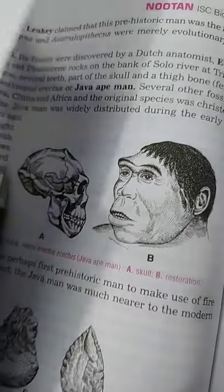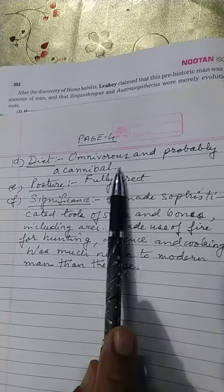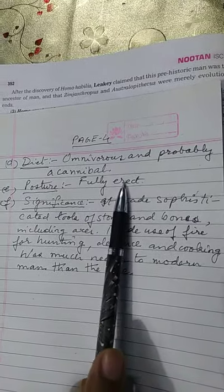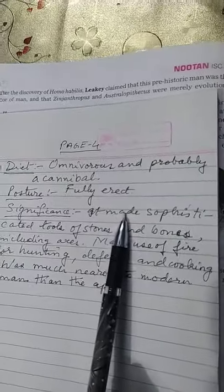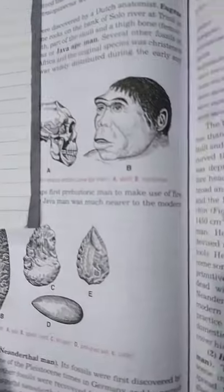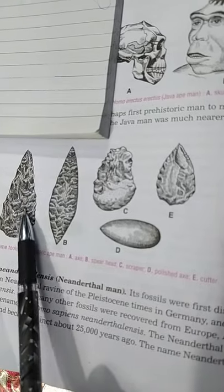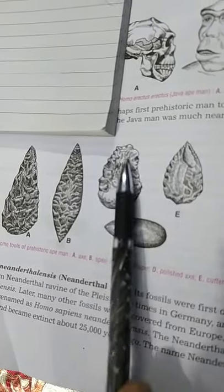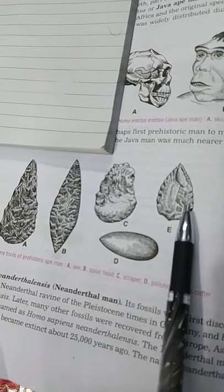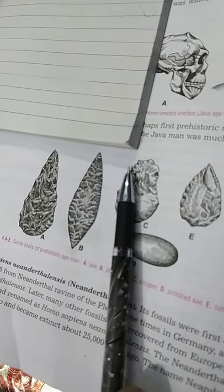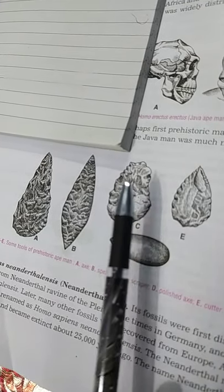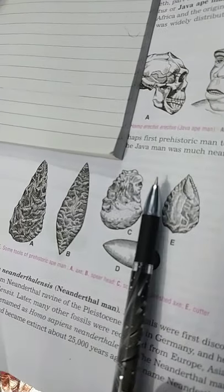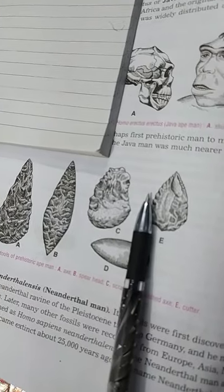The diet of the Java man was omnivorous and it was probably a cannibal. Its posture was fully erect, standing absolutely upright on its feet. The significance was that it made very sophisticated tools — well-shaped stone tools and even sharpened bones to make axes for cutting wood. Most importantly, it made use of fire for the first time for hunting, defense, and cooking, and was much nearer to modern man than the ape.